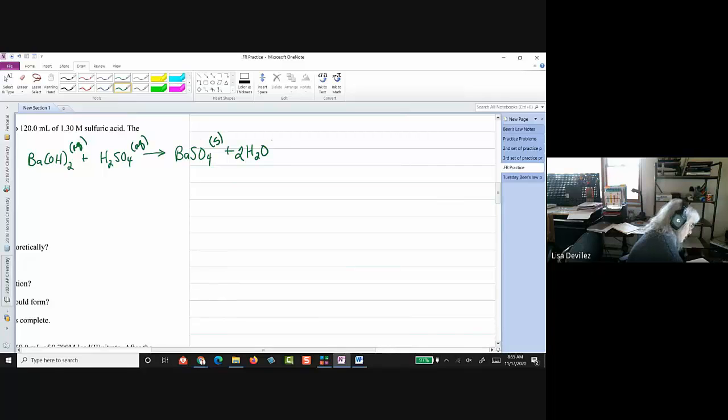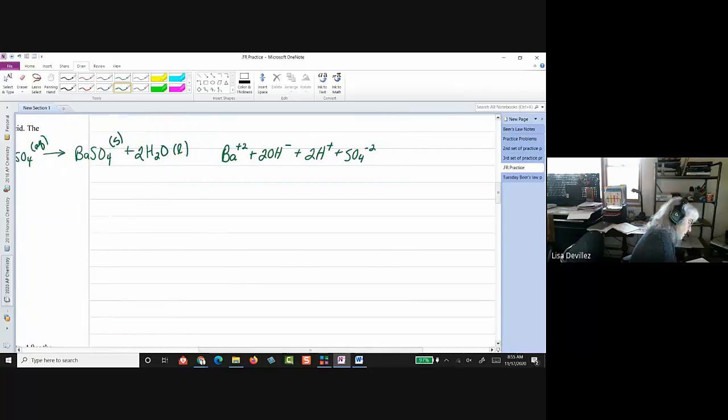And let me go back to my screen here. All right. All right. And then this would be liquid. Okay. So, we would get, all right. We would get a barium and two hydroxides and two H plus, plus SO4 minus two. And then over here, that's a solid. And then two H2O.